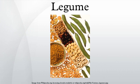Legume trees like the locust trees or the Kentucky coffee tree can be used in permaculture food forests. A legume fruit is a simple dry fruit that develops from a simple carpel and usually dehisces on two sides. A common name for this type of fruit is a pod, although the term pod is also applied to a few other fruit types, such as that of vanilla and radish.